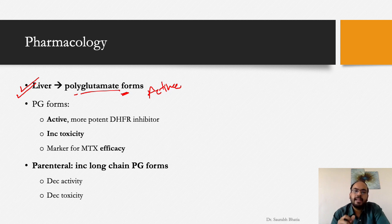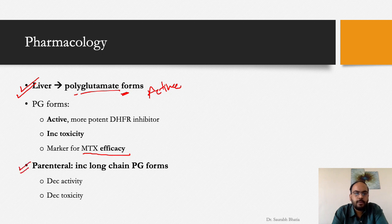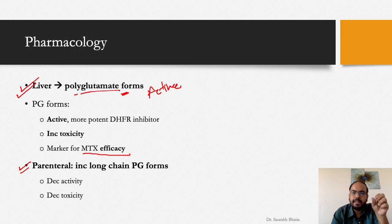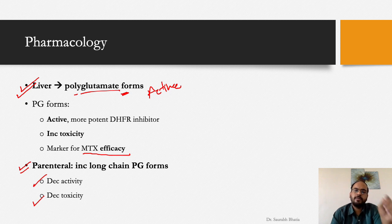Polyglutamate forms are markers for both methotrexate toxicity and efficacy — good serum levels indicate the drug is converting properly. Parenteral administration leads to formation of increased long-chain polyglutamate forms, which have decreased activity and decreased toxicity. Parenteral administration also bypasses the nausea, vomiting, and GI disturbances associated with oral intake.